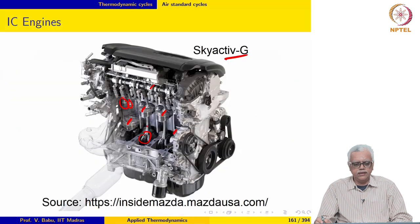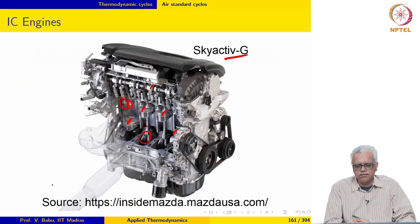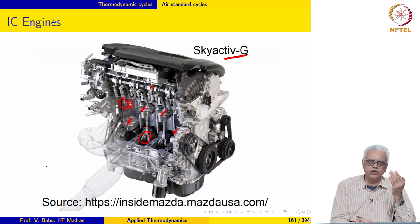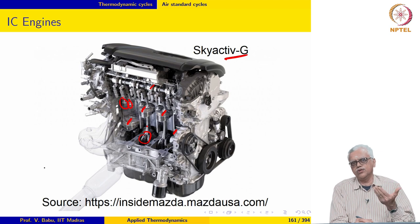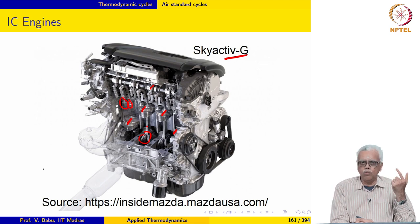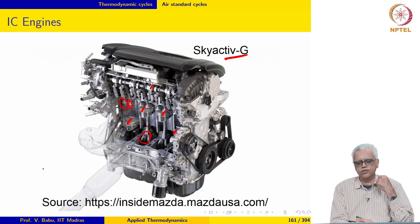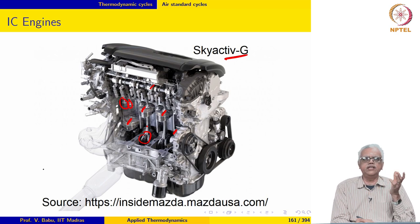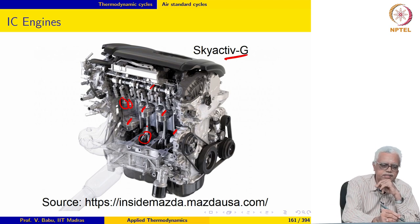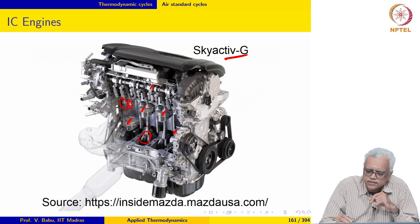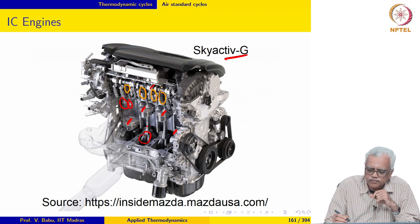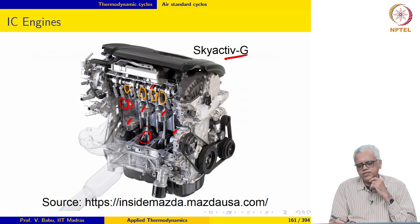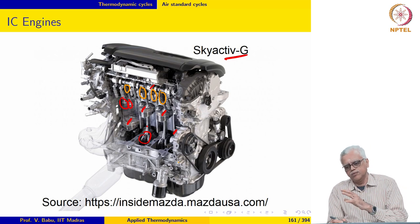As the strokes are executed the valves are opened and closed appropriately. During the intake stroke the intake valve is open but exhaust valves are closed. Typically these are four-valve engines with two intake and two exhaust valves. The camshaft, with its spring-loaded valves, ensures the valves are in the appropriate open or closed position as the processes take place.